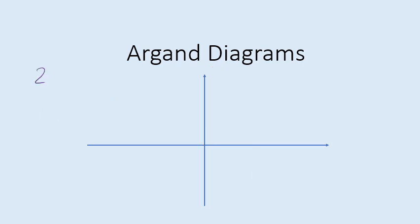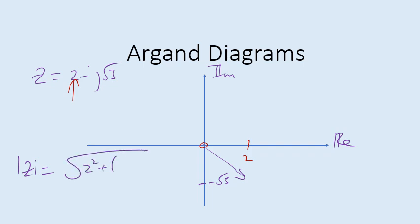Let's try z = 2 - j√3. The real part is 2, so we take 2 units along the horizontal axis, and the imaginary part is -√3, which is approximately -1.73, so we go down to -√3 on the vertical axis. The vector sits in the fourth quadrant. The magnitude is √(2² + (-√3)²) = √(4 + 3) = √7. Be careful: (-√3)² = 3, not 9. So the length of the vector is √7.